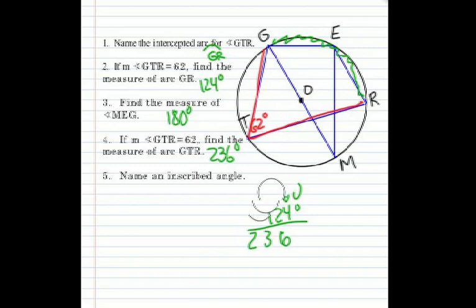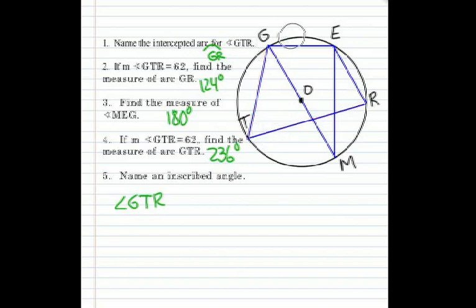Now let's name an inscribed angle. Well, we already have one we've been working with, and that would be angle GTR. Any inscribed angle is an angle where the vertex is on the circle itself. So we have another one here. Let's call it TGM.